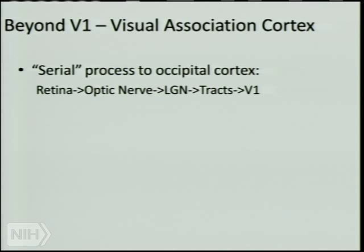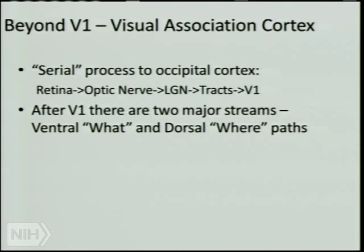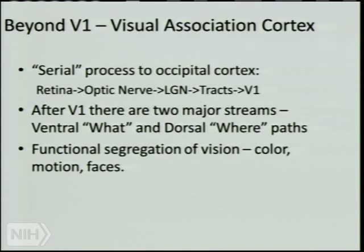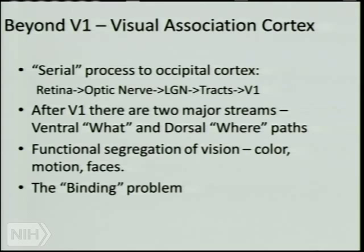Getting into visual association cortex: after the serial process going to occipital cortex through retina, optic nerve, lateral geniculate, and radiations into V1, people have hypothesized two major streams — a ventral 'what' stream and a dorsal 'where' stream. As you go higher in visual association cortex, you get more segregation of vision — color, motion, and faces in different areas. There's also the binding problem: at some point you have to put all these segregated features together into a single percept, and how that works is not really understood.